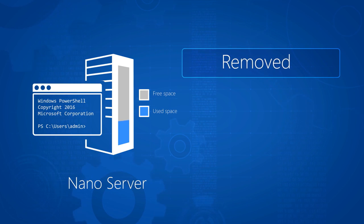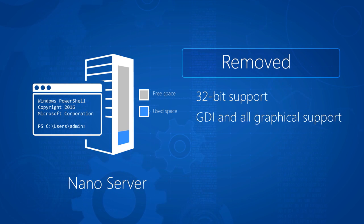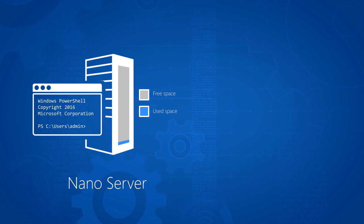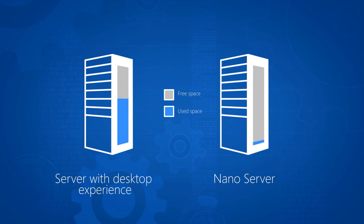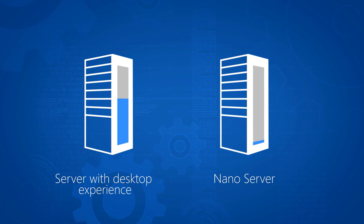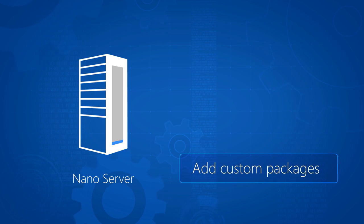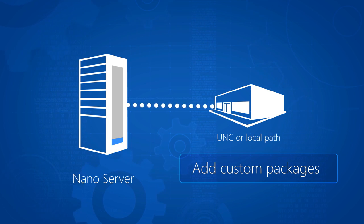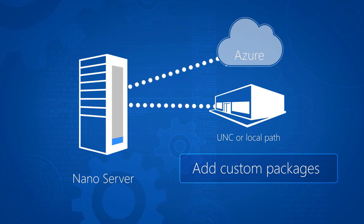With NanoServer, we've removed 32-bit support, the graphics stack, remote desktop, and WinLogon, so you have the bare minimal components. We've also been mindful of maintaining the critical APIs while optimizing NanoServer to be literally 25 times smaller than Server with the desktop. That said, while you have a tiny footprint in terms of size, you can still install packages your application needs from various repositories — either from a local path, a UNC path, a local directory, or from the cloud.